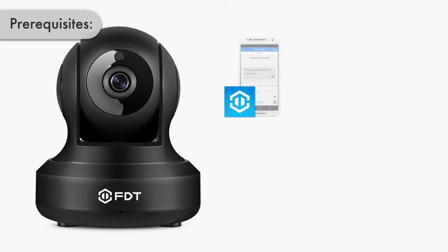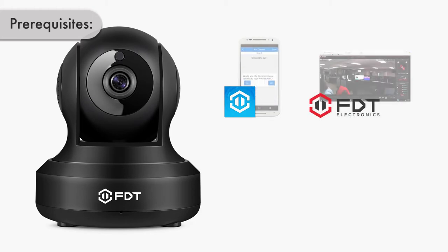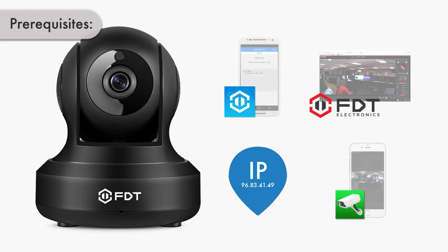Set up your FDT camera on your local network using the FDT View app. Set up Desktop Access. Note down the external IP address of your network. And install the LiveCams Pro app on your iOS smartphone or device. A link to the FDT Wi-Fi Setup video and the FDT Desktop Access Setup video is available in the video description.